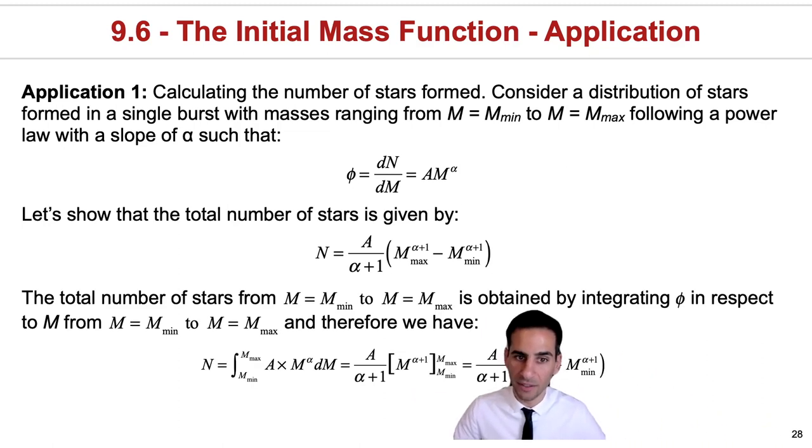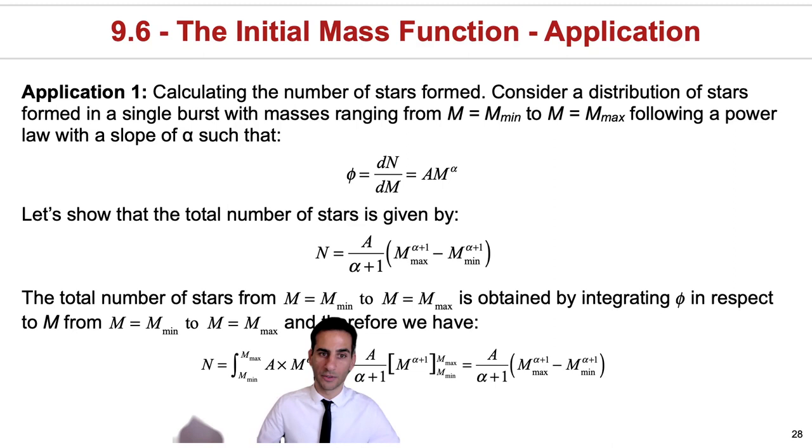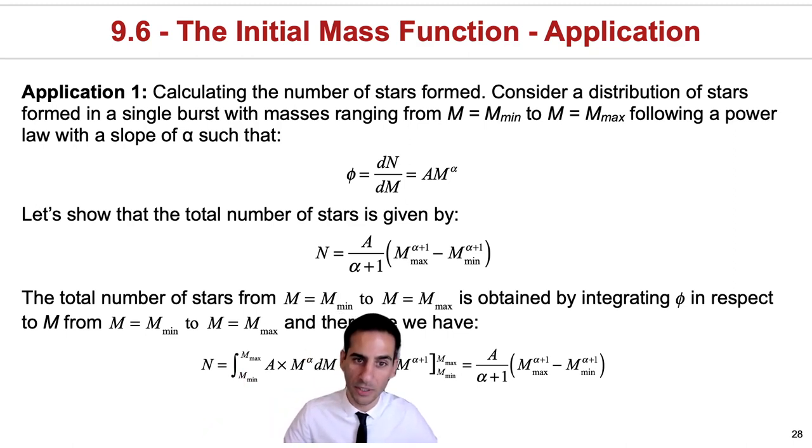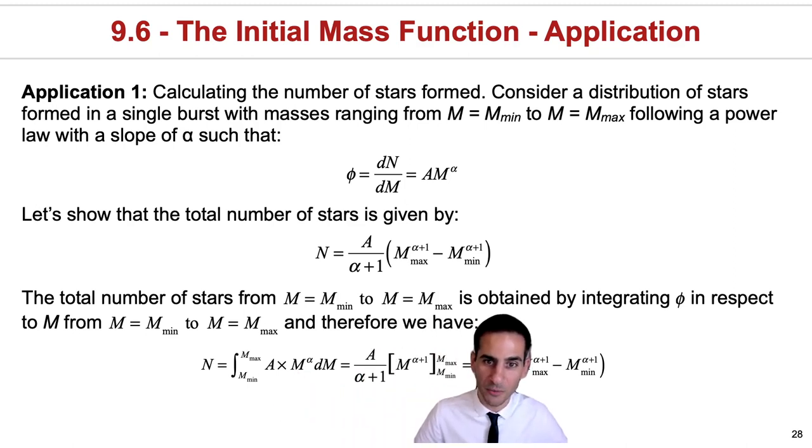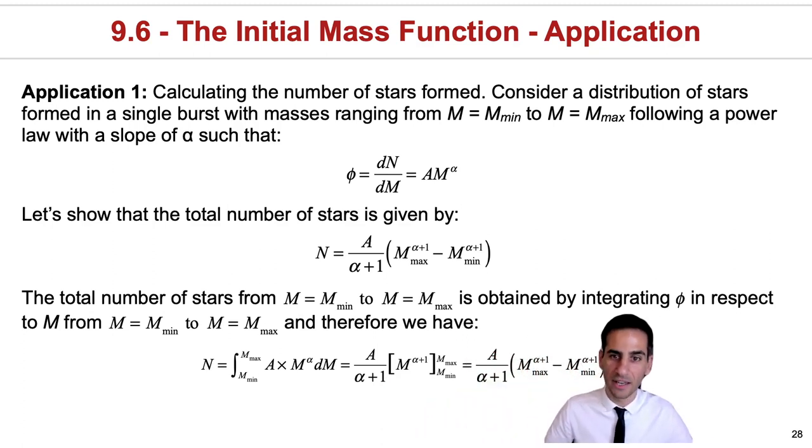This can be very easily done. Essentially all you have to do to calculate the total number of stars is integrate from minimum mass to maximum mass: the integral of A times M to the power of α. This is a very simple integral, and when you integrate you end up with A, the constant of the initial mass function, divided by the exponent plus one, and the difference between M_max^(α+1) and M_min^(α+1).